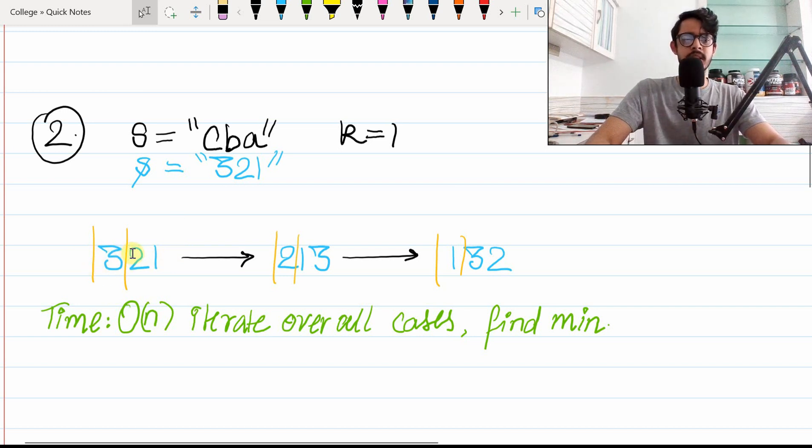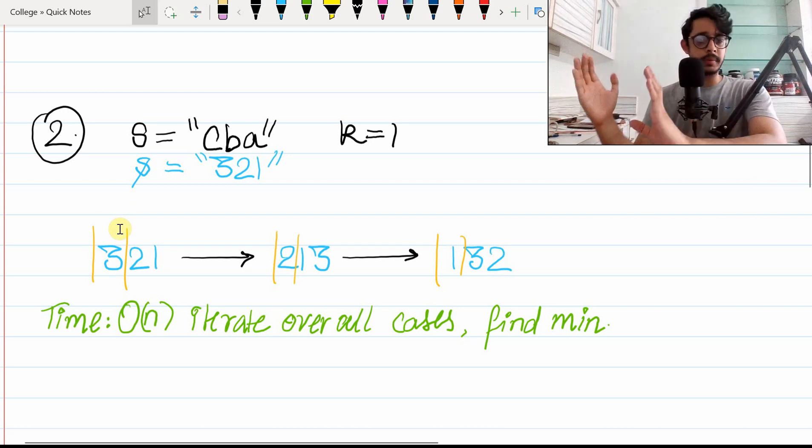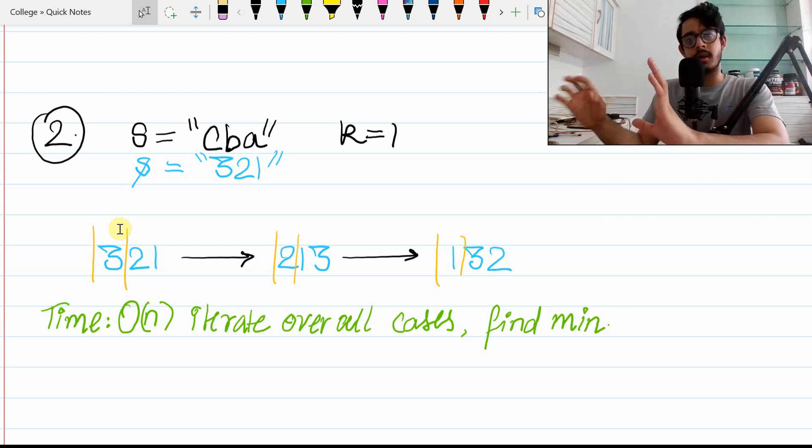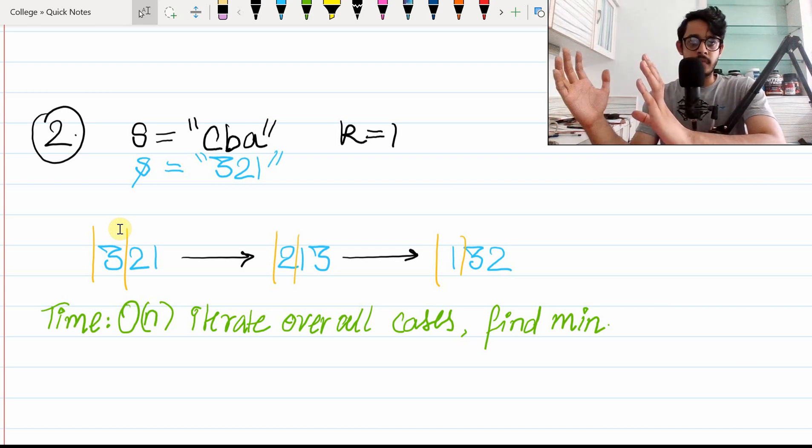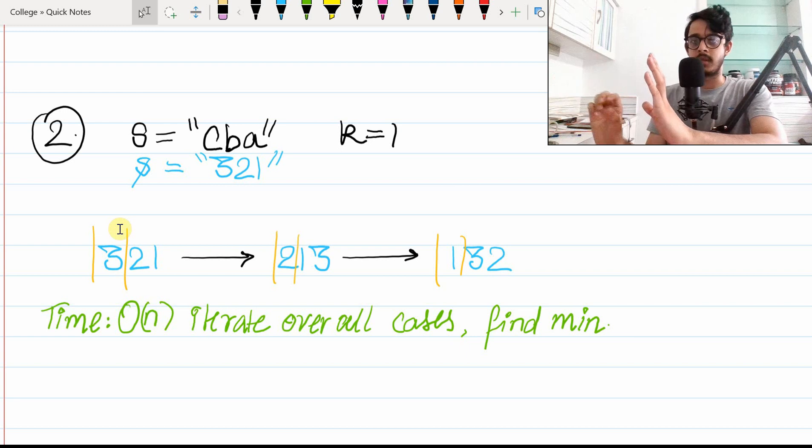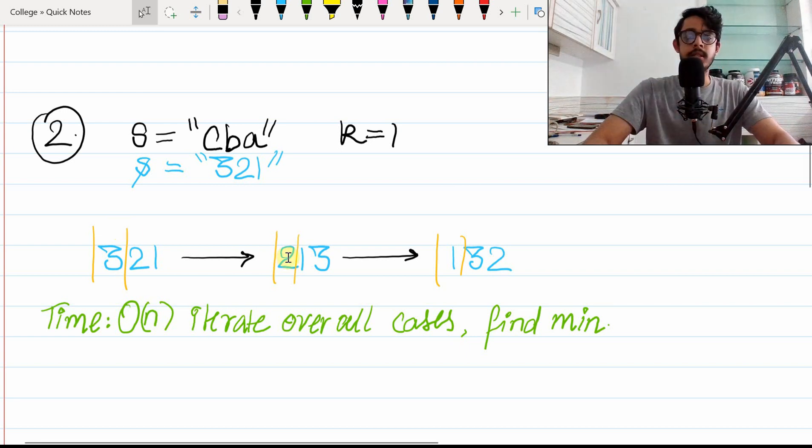K equals 1 specifies the boundaries, basically saying that from index 0 all the way up till index 1, whatever characters in the middle can get kicked out. In the case of 3-2-1, we can select 3, which is the only element here, and kick that out. What we'll get is 2-1 and 3 kicked out, so 3 will be at the end.